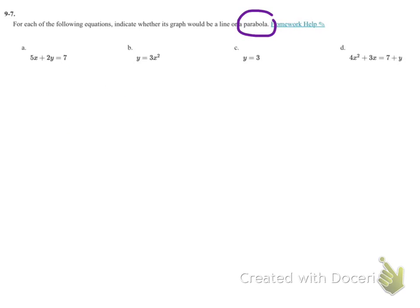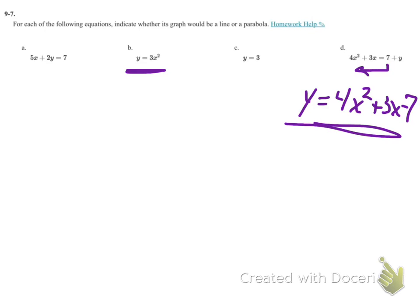If I take a look at problem b, y equals 3x squared, and problem d, problem d looks a little bit different, but if I want to get y by itself, I would just subtract 7 from both sides and get y equals 4x squared plus 3x minus 7. That now is also a parabola. So b and d are both parabolas.